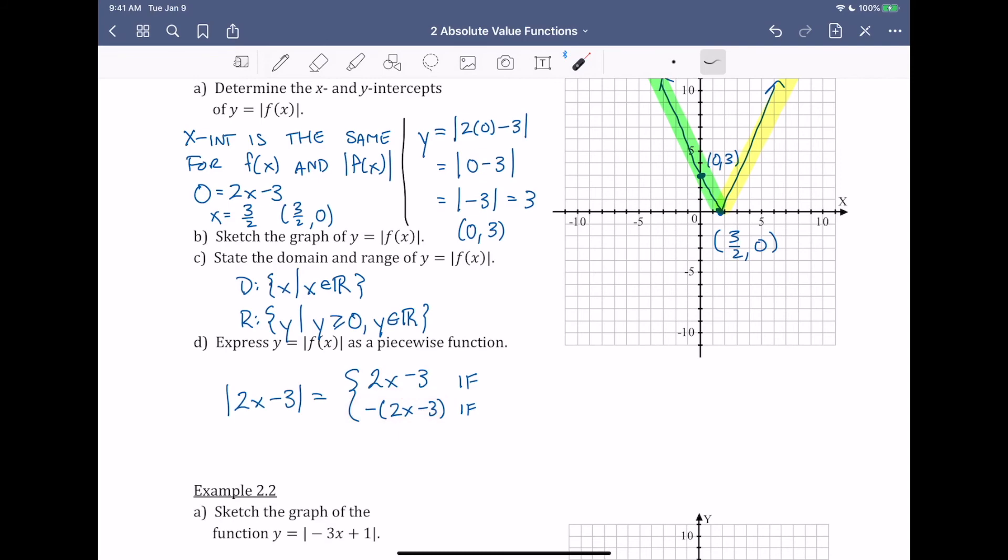The last part is to determine where we want each of these functions. If we look at our graph, everything to the right of the x-intercept was the original function, so I'm going to say x ≥ 3/2. And then we took the negative of everything to the left of the x-intercept, so x < 3/2.